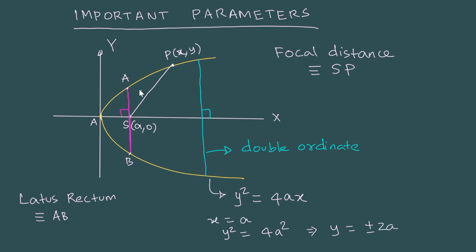The y-coordinate of A is +2a, and the y-coordinate of B is -2a. We can easily see that the distance between A and B is 4a. This is an important parameter of the parabola, so keep this in mind.